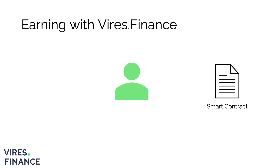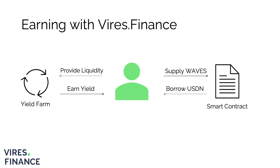You provide assets to the pool so they can be borrowed by other users and earn interest on supply. Other scenarios require taking an actual loan. You can deposit one asset, for example Waves or Bitcoin, take a loan of another, let's say USDN or USDT, and use it for trading or providing liquidity. The borrowed tokens can be used for farming on Swapify or any other AMM, for example.